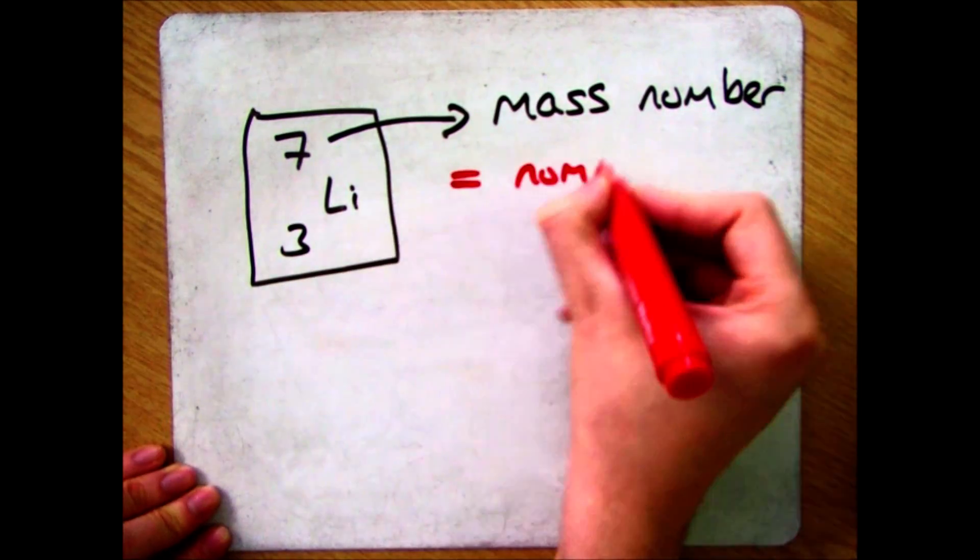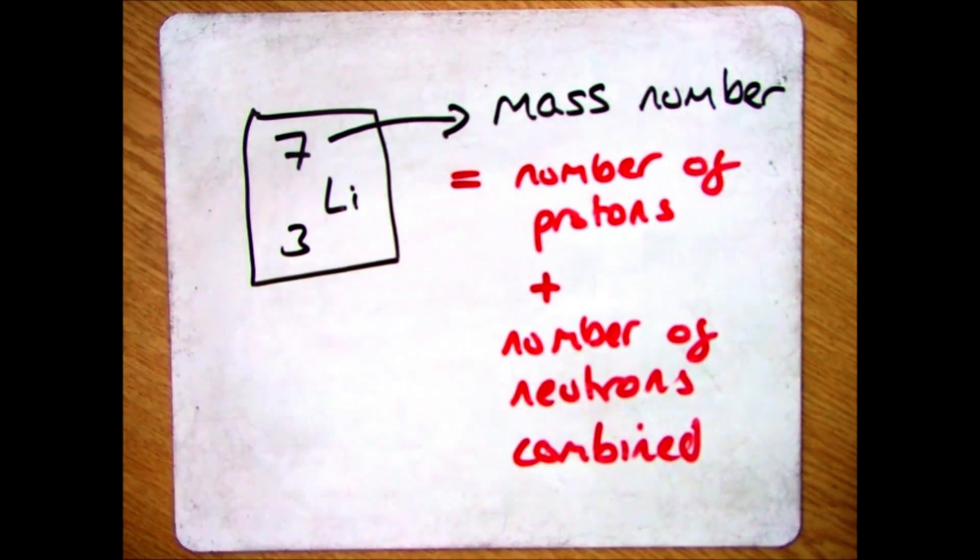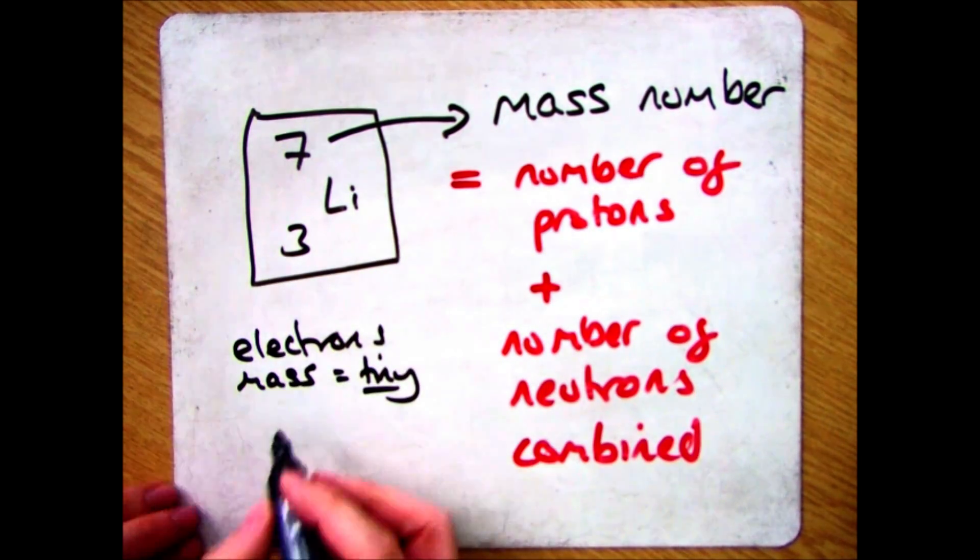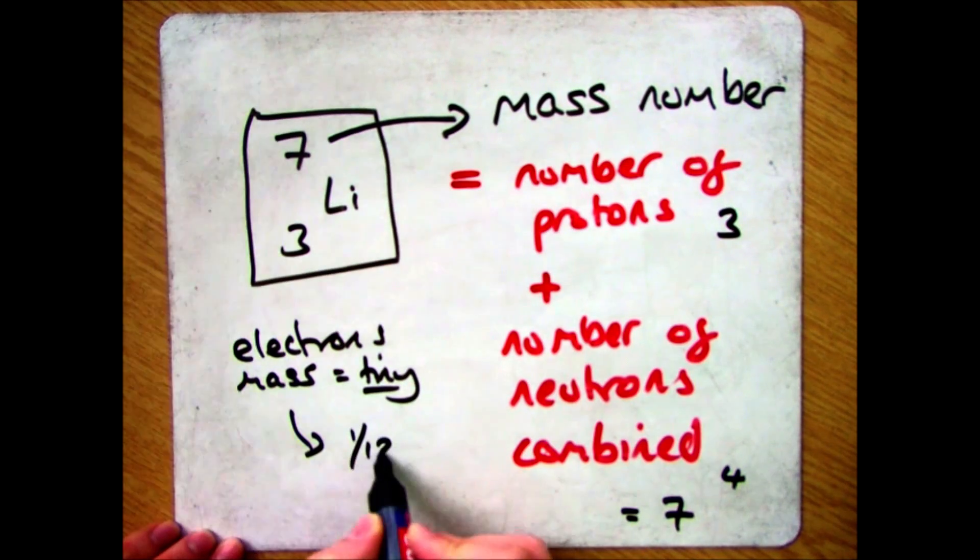So the mass number is the number of protons and neutrons added together. And the reason that electrons don't come into it is because the mass is tiny, negligible, we don't include it.